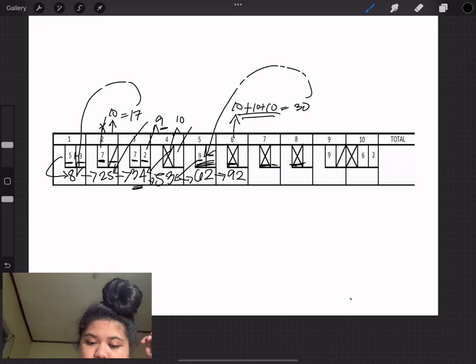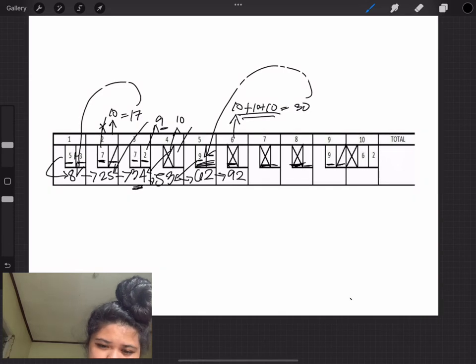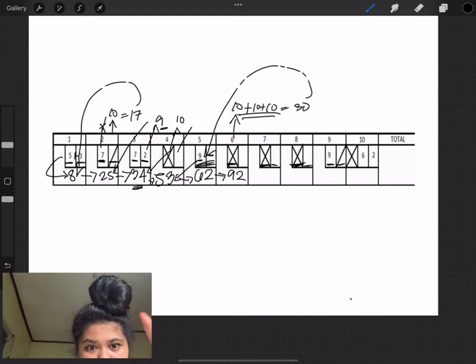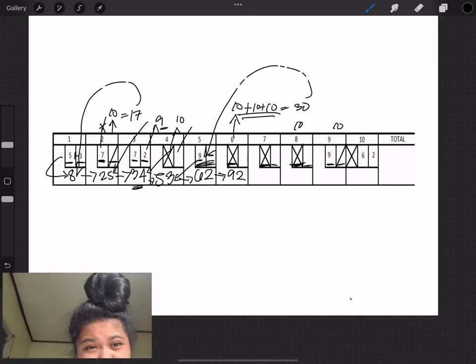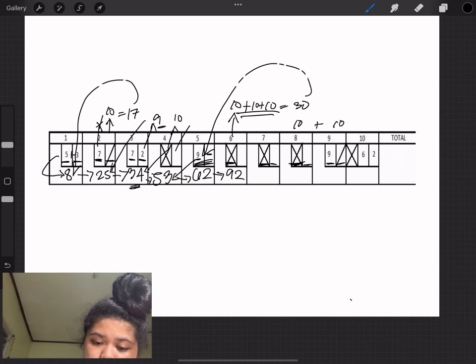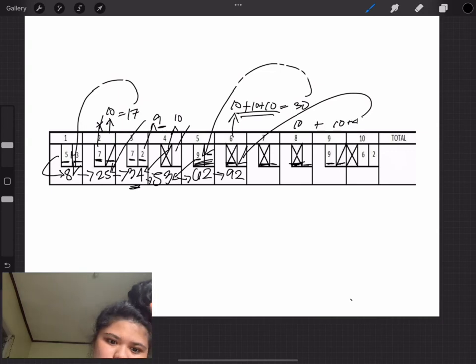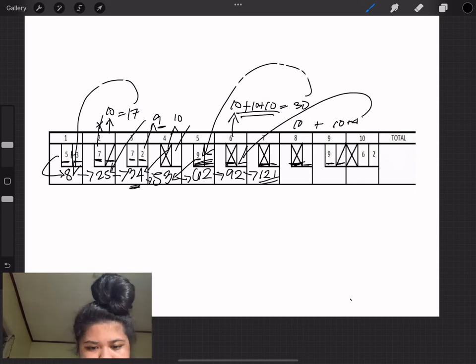Seventh frame, we get ourselves another strike. So the next 2 balls over, that's an 8 and then a 9. In the seventh frame, it's another strike. So we get ourselves the 10 points from the eighth round and then the 9 points from the first ball of the ninth round. So that gives us 10 plus 10 plus 9 plus the 92 of the previous score, and that gives us 121 for the seventh score.